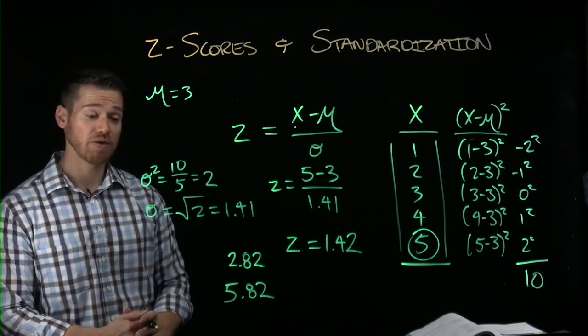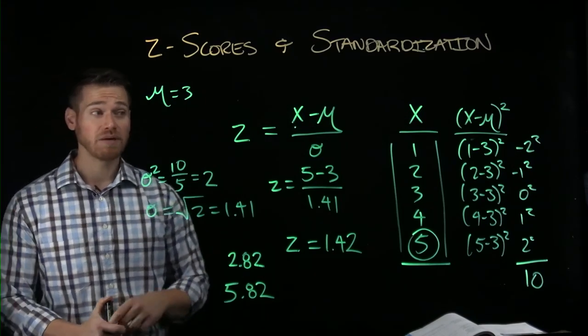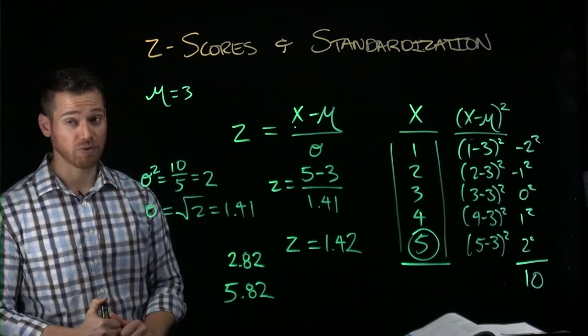It does require us to know the mean and the standard deviation. If that information is already given, we can really easily make any score into a z-score.